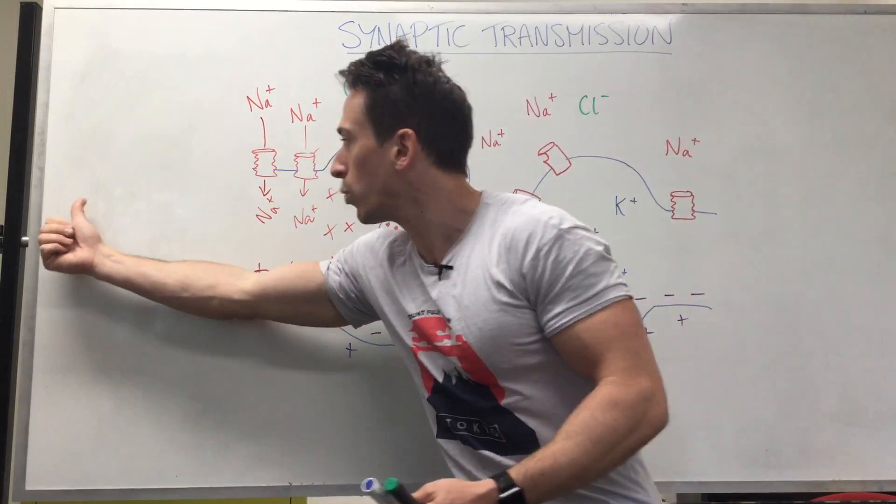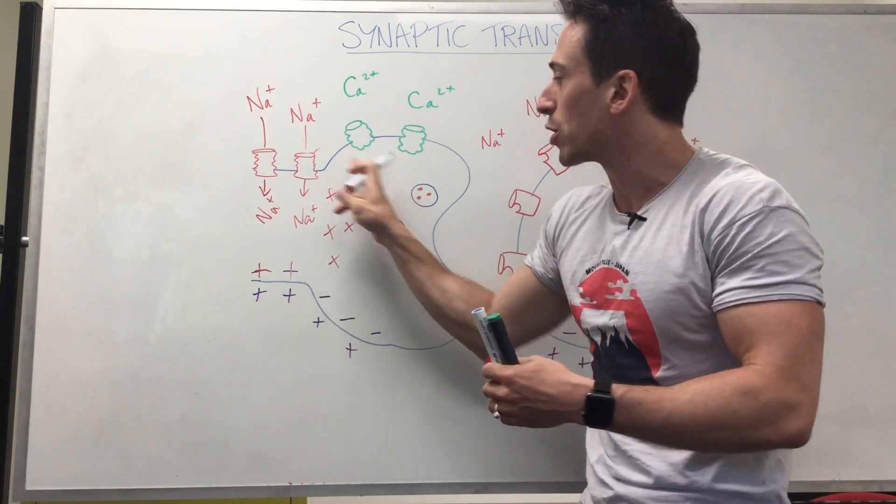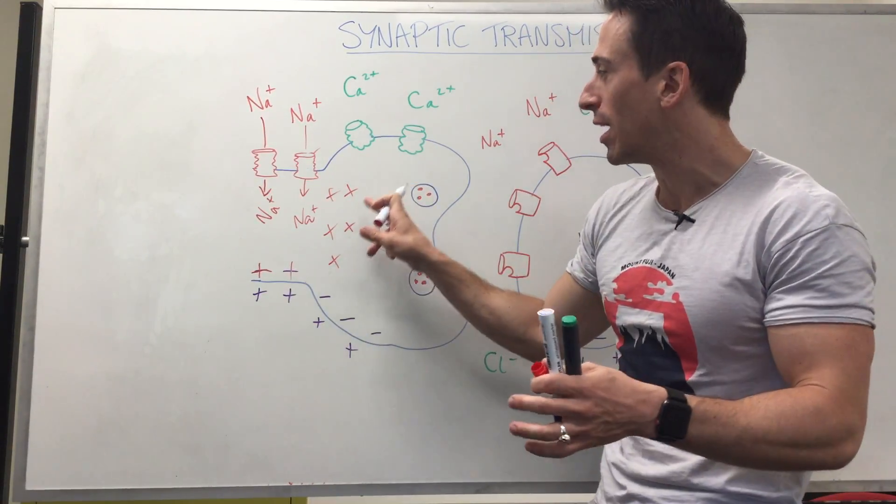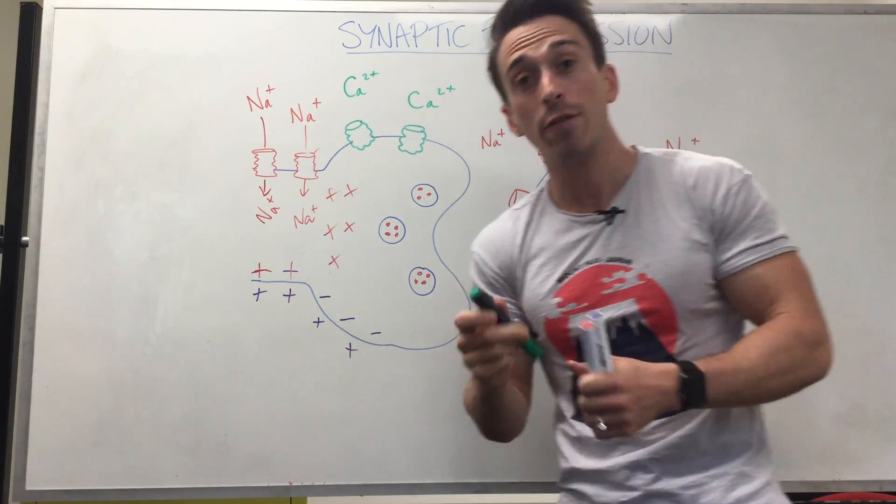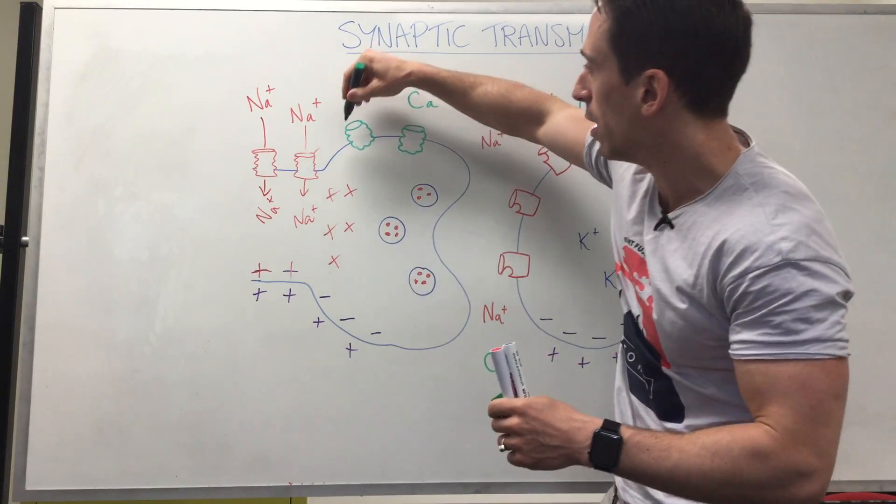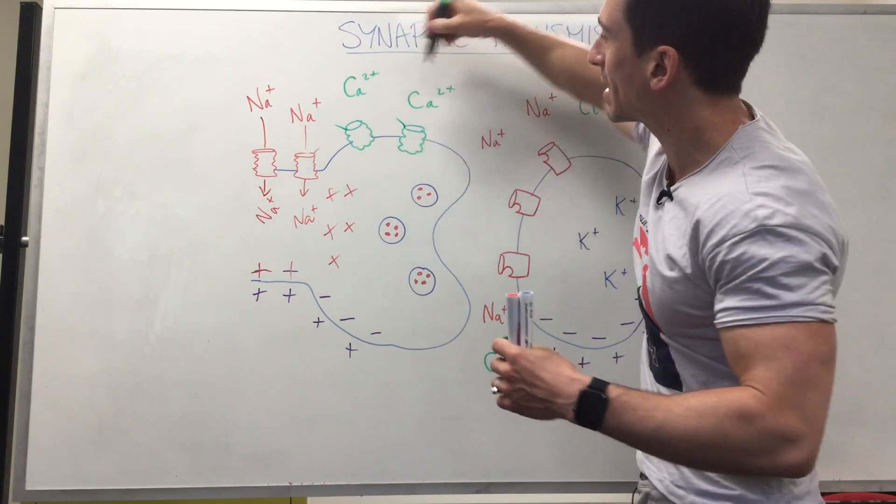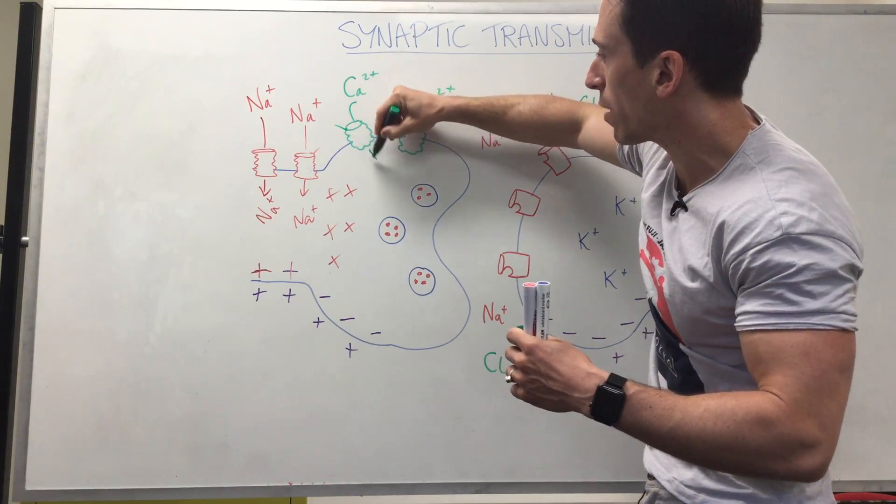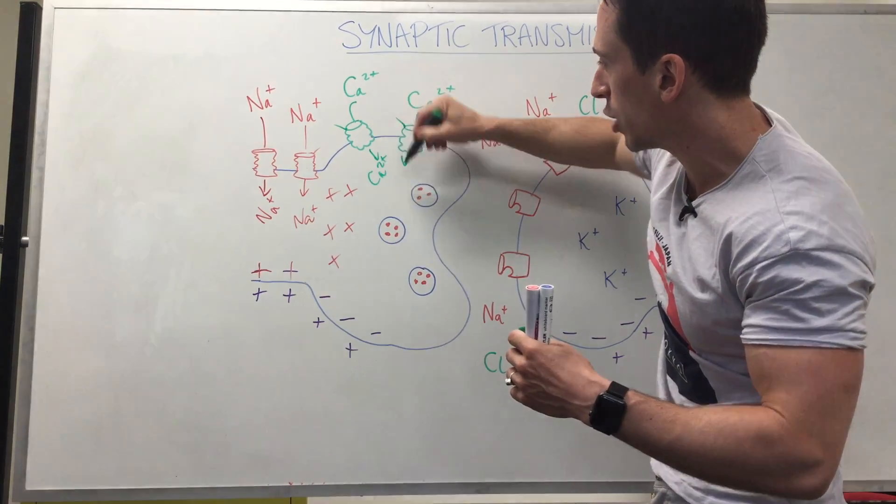So what's happened now is all the sodium channels have opened up and we're at the end of the neuron. It becomes so positive here at the end of the neuron that it stimulates a different type of voltage-gated channel. It stimulates a voltage-gated calcium channel. And so they start to flip their lids and open up. We've got all this calcium outside. Calcium rushes into the cell. Now calcium is positively charged as well.